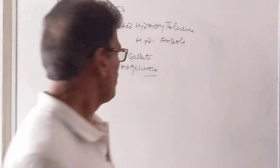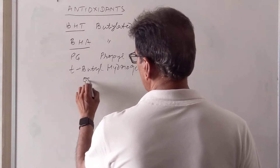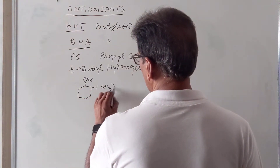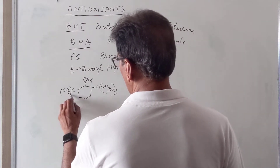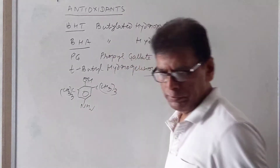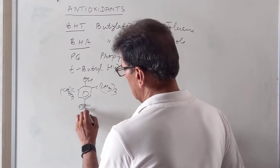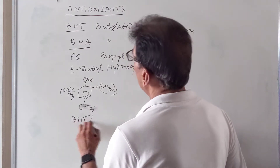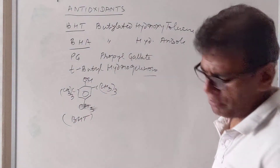Another antioxidant is Tertiary Butyl Hydroquinone (TBHQ), which is also used as an antioxidant. Let us look at their structures — the first one is BHT, Butylated Hydroxytoluene.